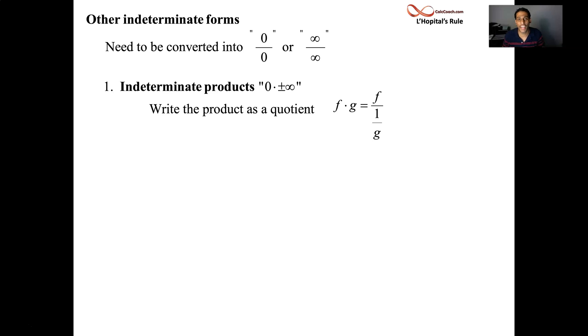So, f times g is the same thing as f divided by the reciprocal of g. Or, f times g is the same thing as g divided by the reciprocal of f. And so, you have to pick which one you want to use. In the denominator, as the reciprocal, you want to pick the one that's easier to take the derivative of. Which reciprocal is easier to take the derivative of?